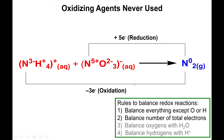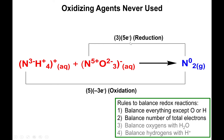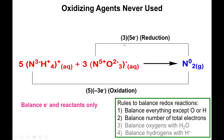We apply the same set of rules as for disproportionation, but this time for the reactants, because that's where we have multiple species present. They both give the same product, so we balance the reactants first. To get the electrons to equal each other, we multiply the top portion by three and the bottom portion by five. We then apply the five to the corresponding reactant and the three to the corresponding reactant.